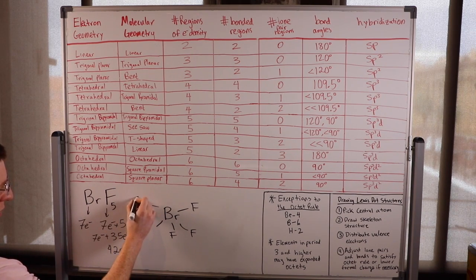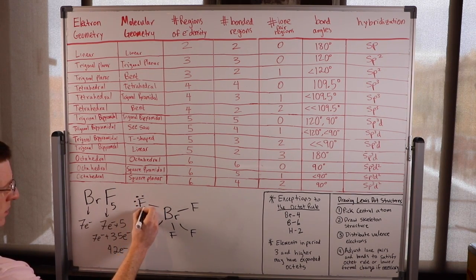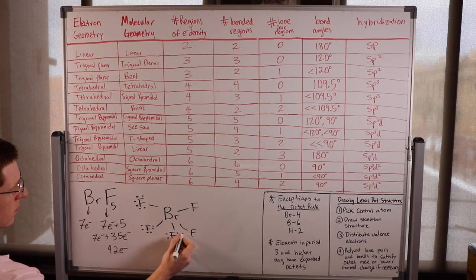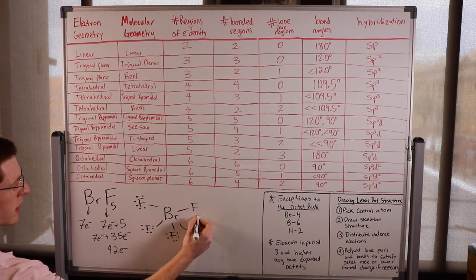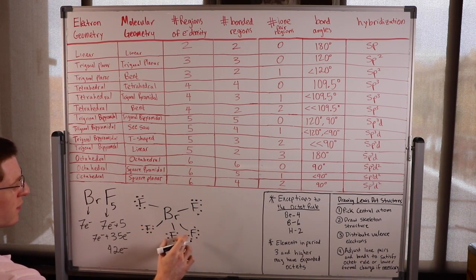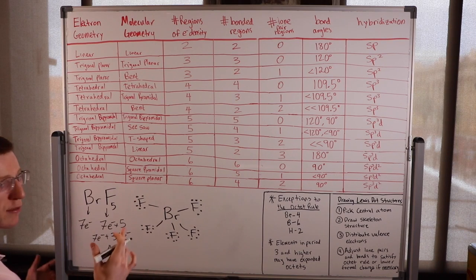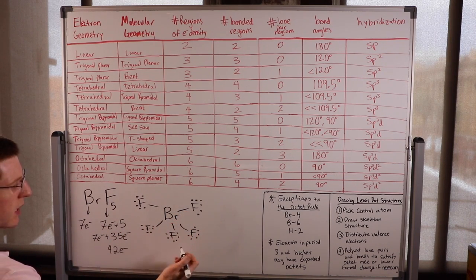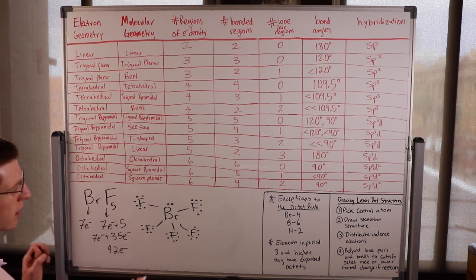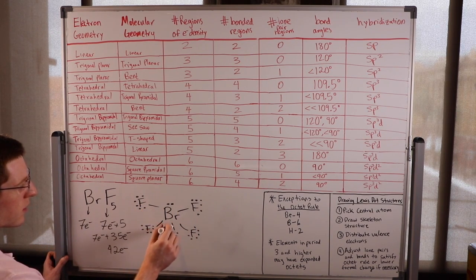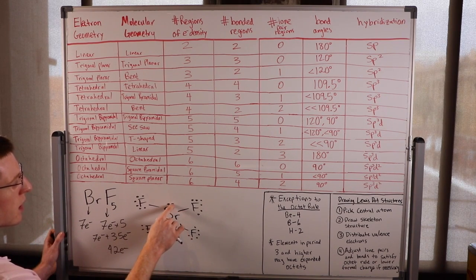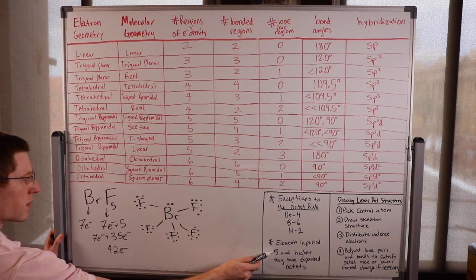Let's satisfy the octets of the outer fluorine atoms. We use six on each — six times five is 30. We still have two left after the 32 electrons, and the only place they can go is on the bromine. The bromine now has an expanded octet with 12 electrons, but it's in period 3 or higher so it's an exception.